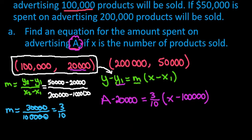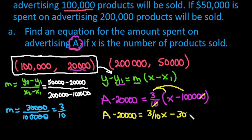So now if I simplify, what I have to do is remember that you always want to distribute first. So I would have a minus 20,000 equals 3 tenths x. And when I simplify this part right here, if I take the 3 tenths times 100,000, I'll lose one of the zeros because of dividing it by 10. And so 3 times 10,000 is really 30,000.